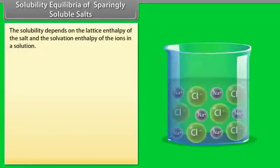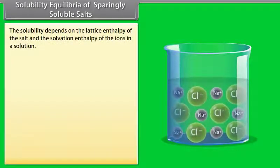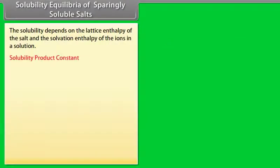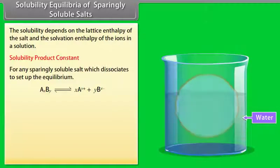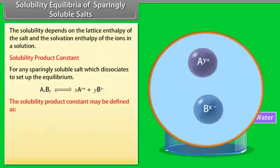The solubility of a salt depends on the lattice enthalpy of the salt and the solvation enthalpy of the ions in solution. For any sparingly soluble salt which dissociates to set up an equilibrium, the solubility product constant Ksp may be defined.